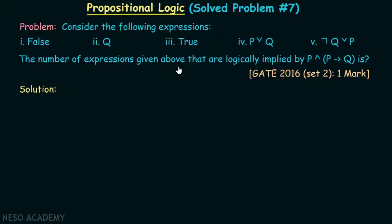The number of expressions given above that are logically implied by p and p implies q is what we need to find out. Let's first try to understand the meaning of logical implication.